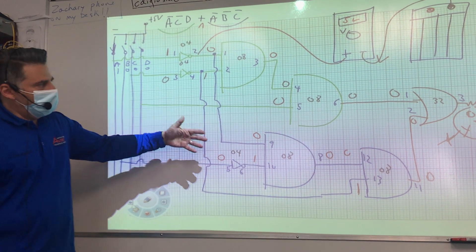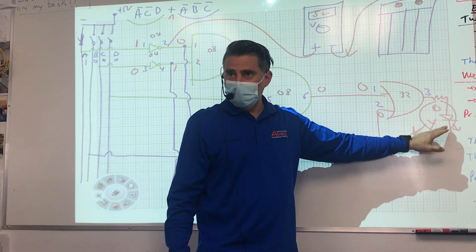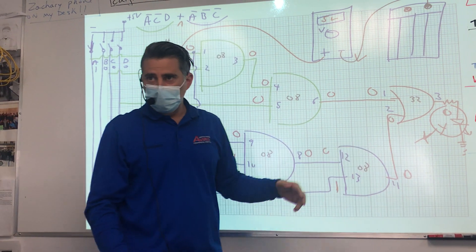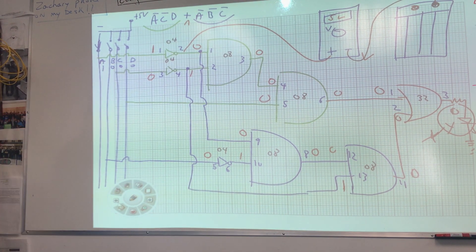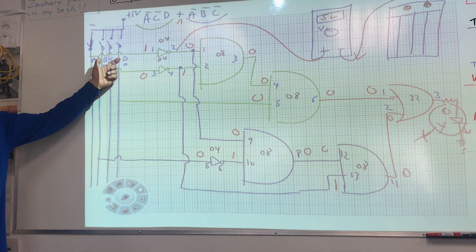So we saw before when we're plotting, the output here was a one and so the output there was a one. Well one is five volts, that's why the LED is on. The circuitry is allowing that current to flow and the LED comes on because of that, even though you're starting with zero zero zero zero.